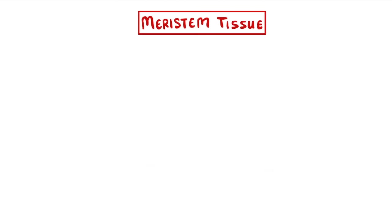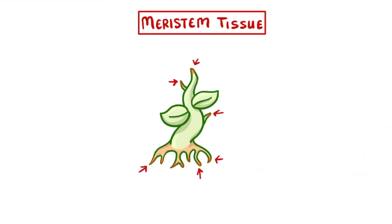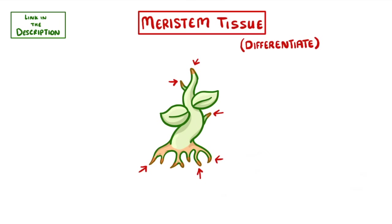One last tissue we need to mention is meristem tissue, which is basically the plant form of stem cells. They're found at the growing tips of the roots and shoots, and can differentiate into loads of different cell types so that the plant can grow. We've already taken a look at meristem cells in our video on stem cells if you want to check it out. We'll also put down the link to our active transport video, which covers the structure and function of root hair cells.